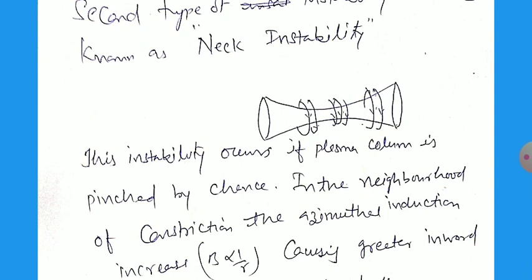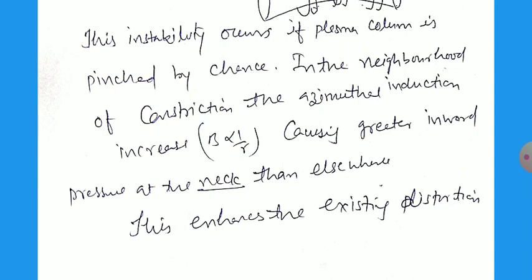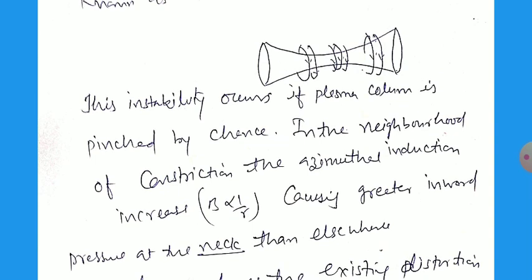You can see the azimuthal induction increases. B is inversely proportional to R. So when R is high, the magnetic field is low, and when R is low, the magnetic field is high. In this case, at the center the size is reduced while in the outer layer of this plasma column it is not so affected by the magnetic field, causing greater inward pressure at the neck than elsewhere. This enhances the existing distribution of molecules or charged particles.